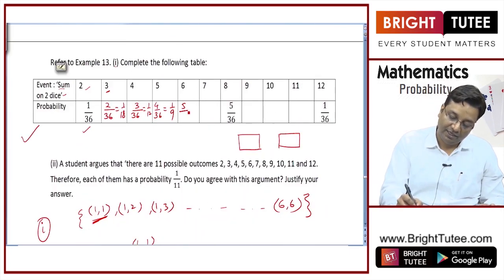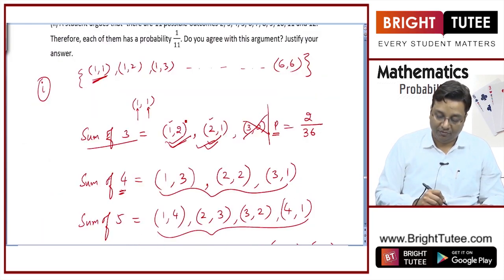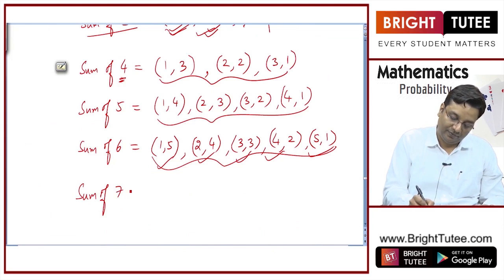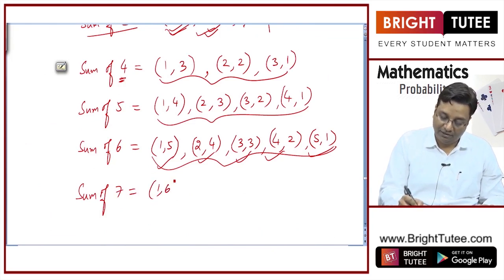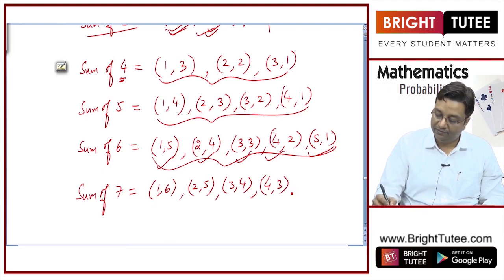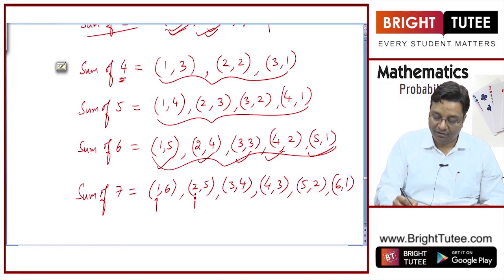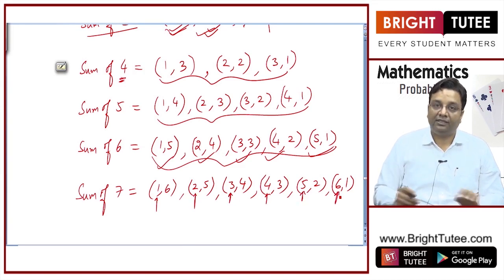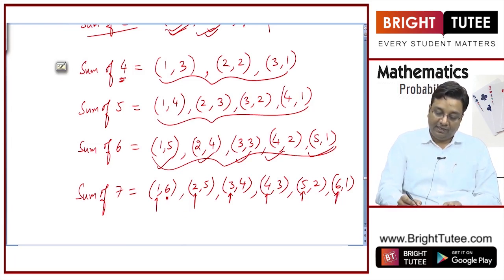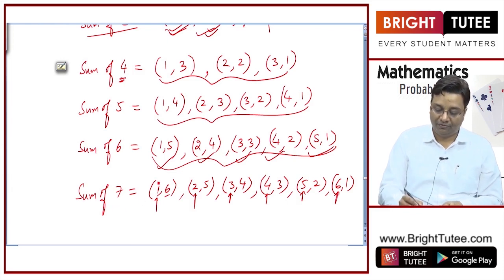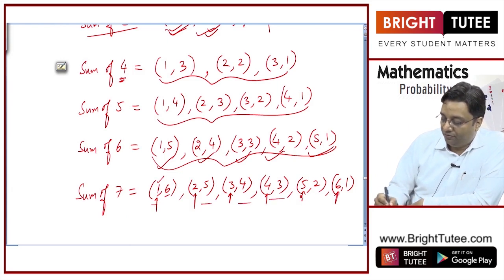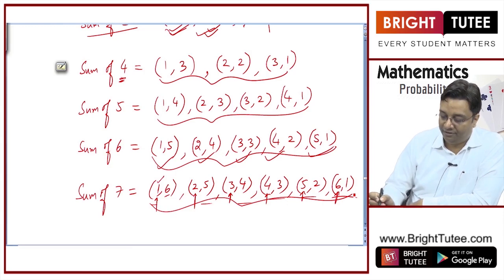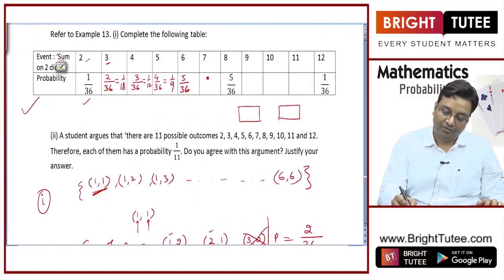Sum of 7 can be obtained by: 1 and 6, 2 and 5, 3 and 4, 4 and 3, 5 and 2, 6 and 1. You start with 1 on the first die, then 2, 3, 4, 5, 6 — these are all the options on the first die and you just make the sum 7 on the second. So there are 6 favorable cases, and the probability of sum of 7 is 6/36, that is 1/6.